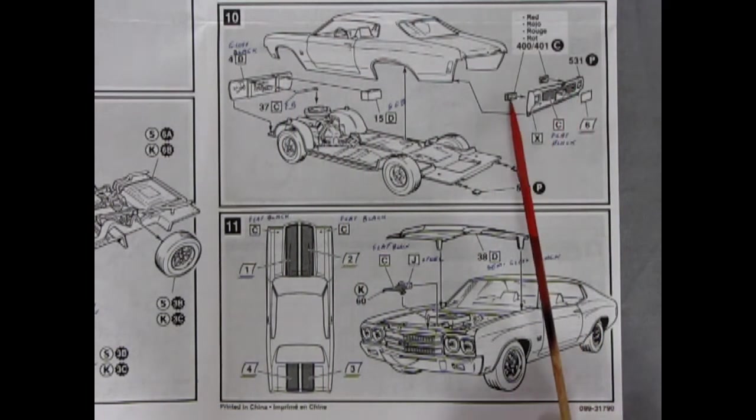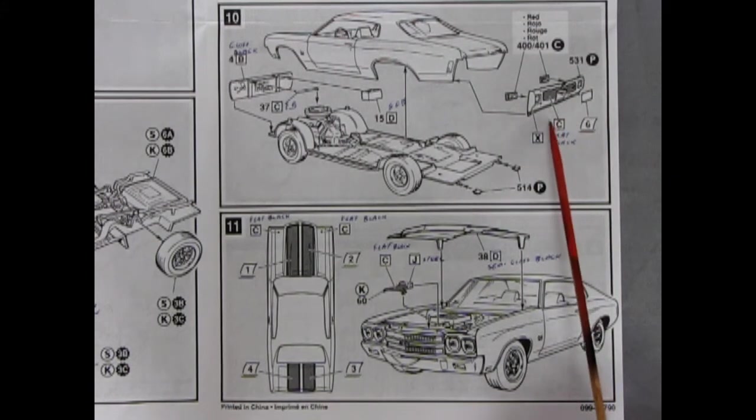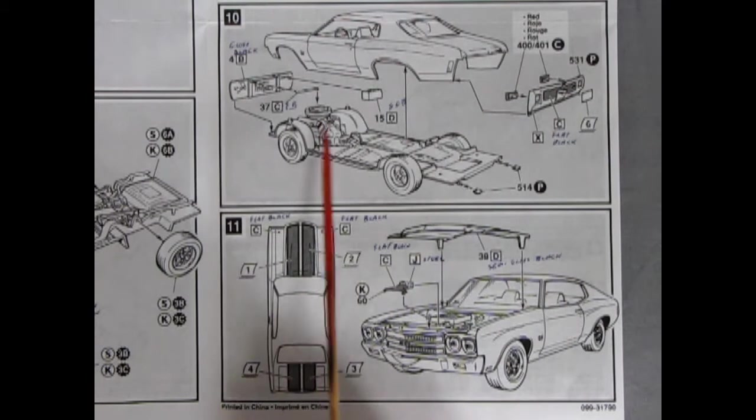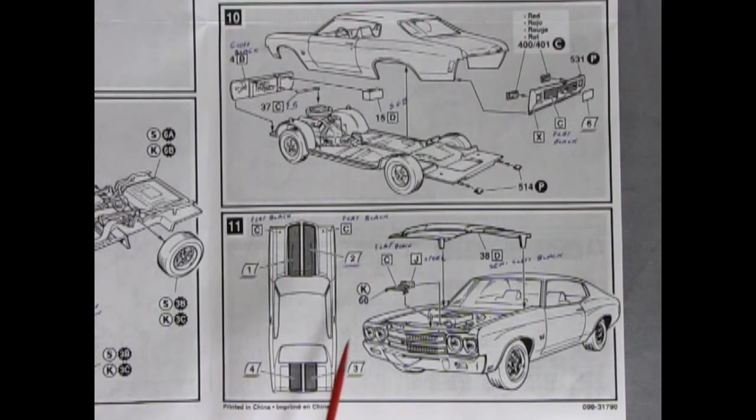Then our rear taillights are going into the rear bumper. There's an array here to paint flat black. Put your decal on. And then the exhaust tips here and here. And then number 11 shows our decals going on the hood and the trunk lids.